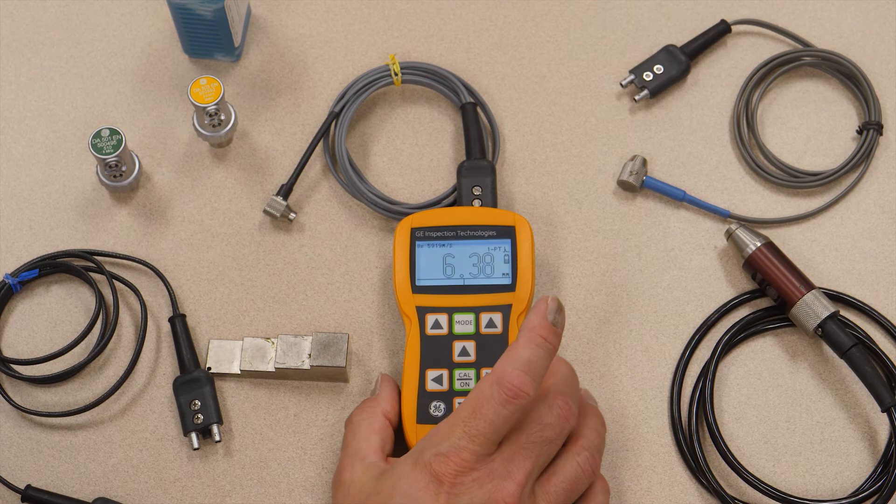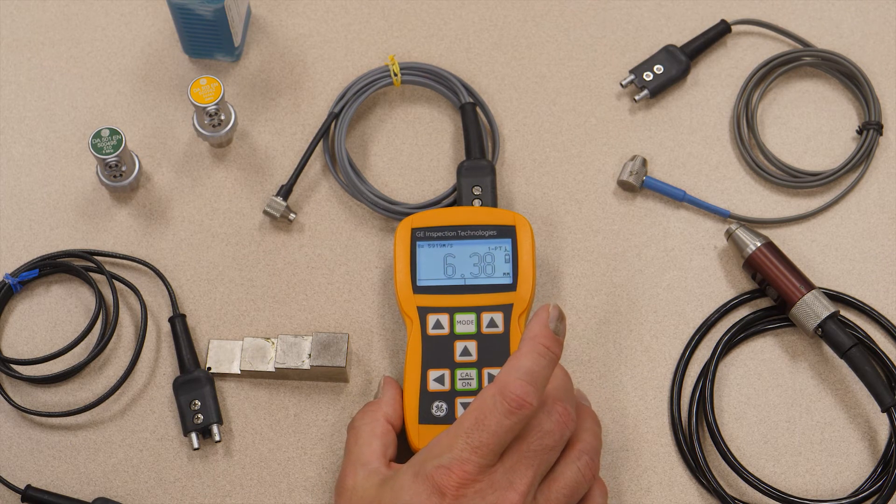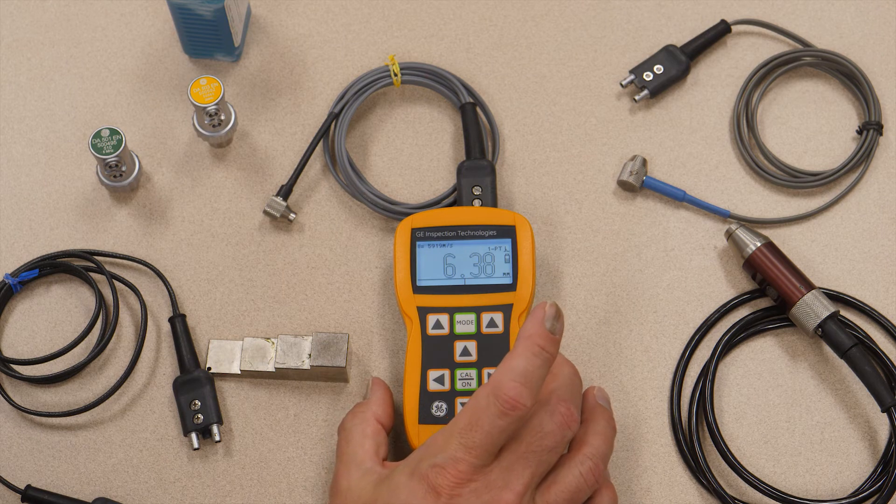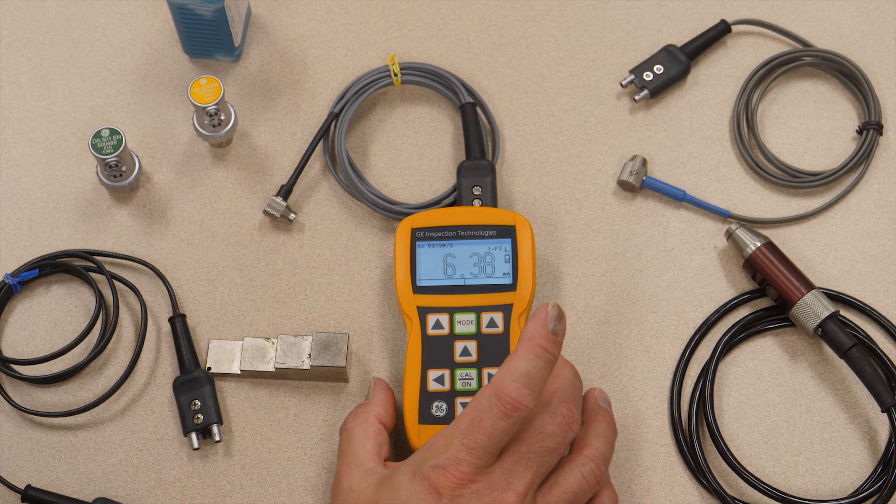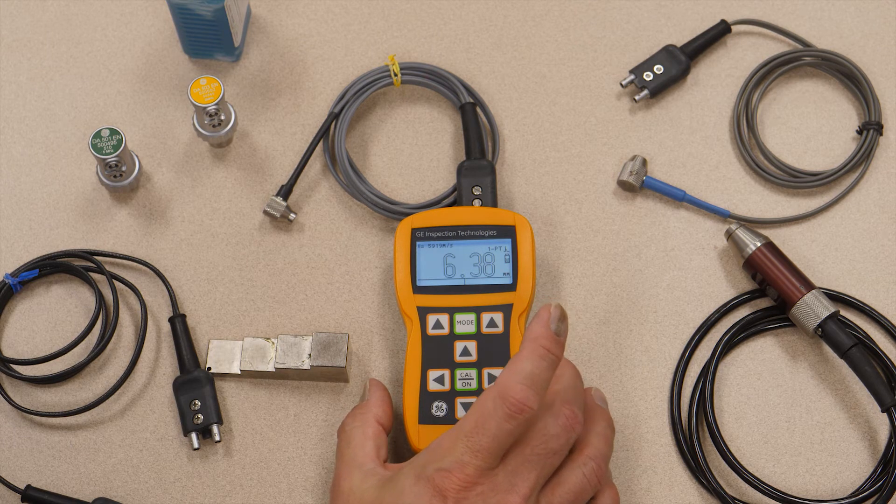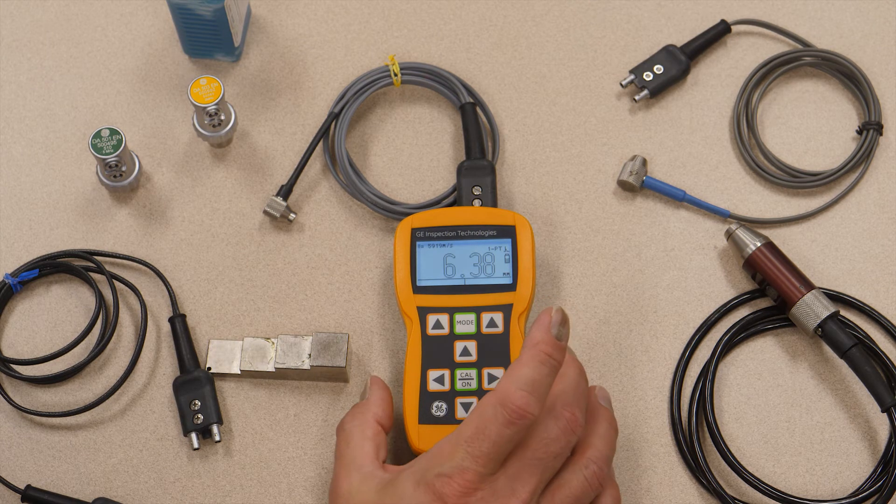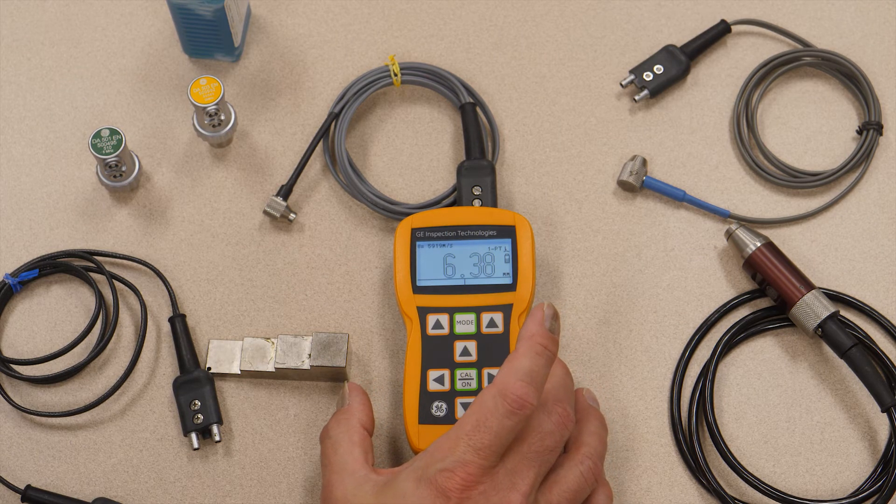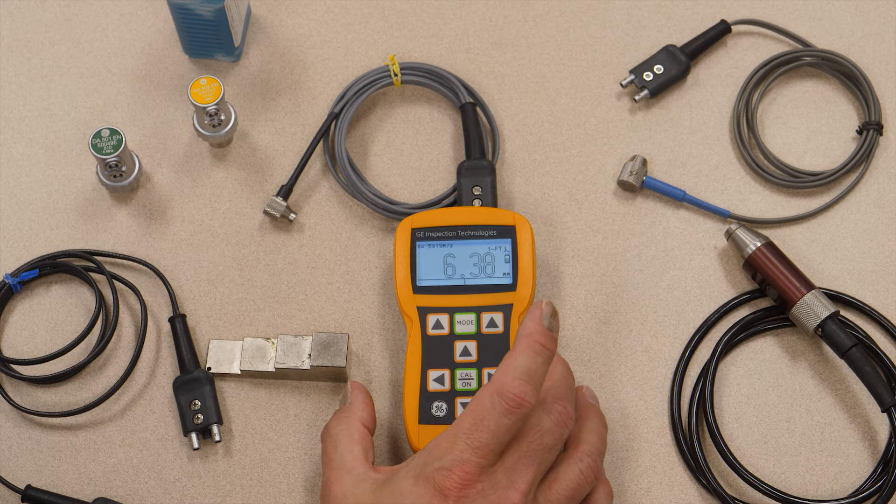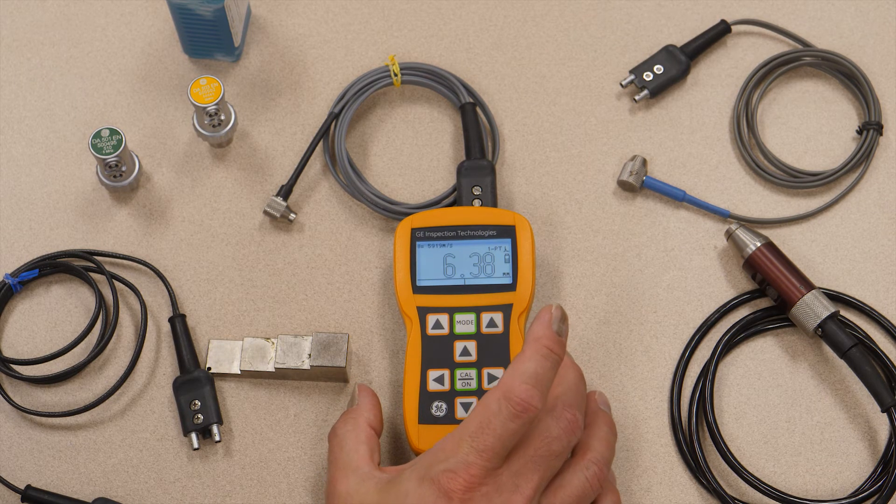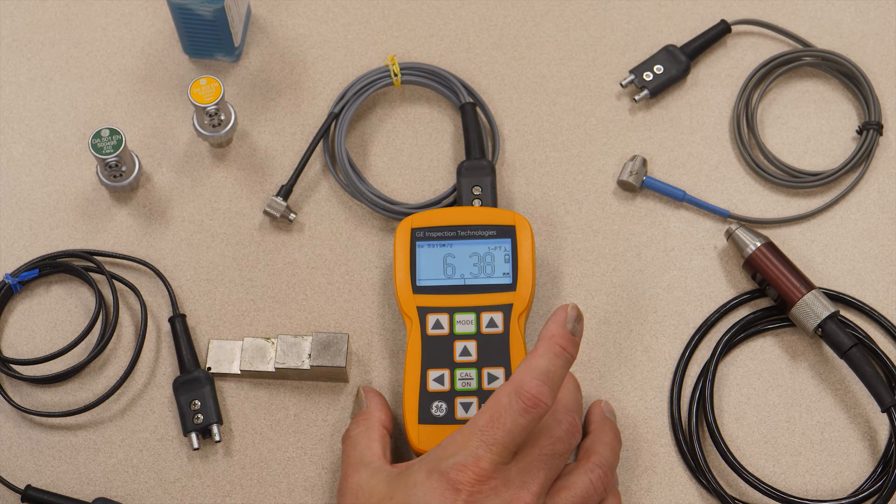The other option that's available in this instrument is dual multi-mode, which provides the capability to take measurements through coatings. So if you have painted material or epoxy coatings on material, you can easily take thickness readings through those coatings. However, the coating thickness in normal dual mode will be added to the thickness of the base steel, so it's going to throw your reading off.